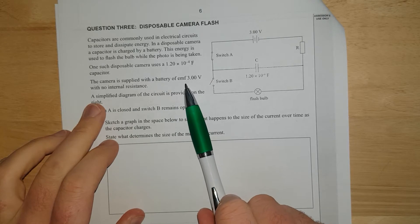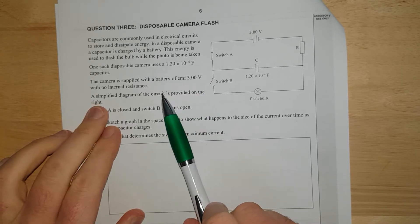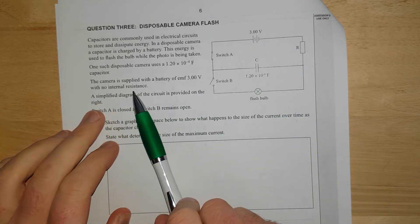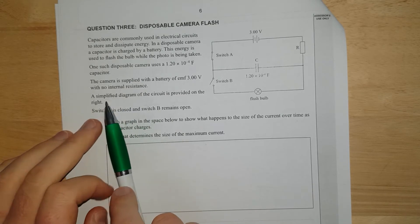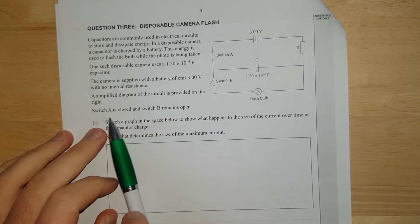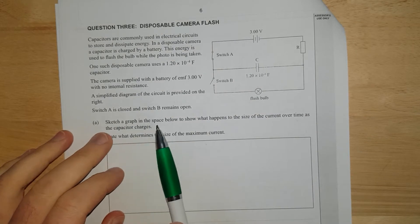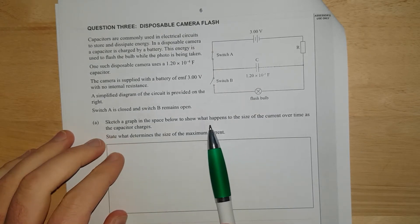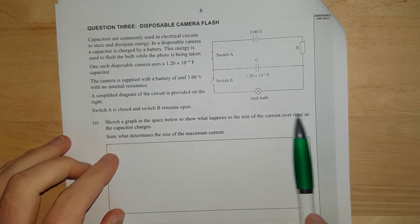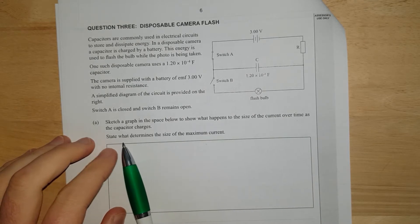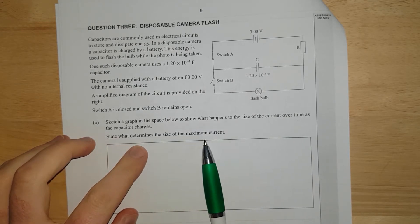Camera is supplied with a battery, it's got a 3 volt battery. It's got a little bit of internal resistance as well. No internal resistance. A simplified diagram is provided.